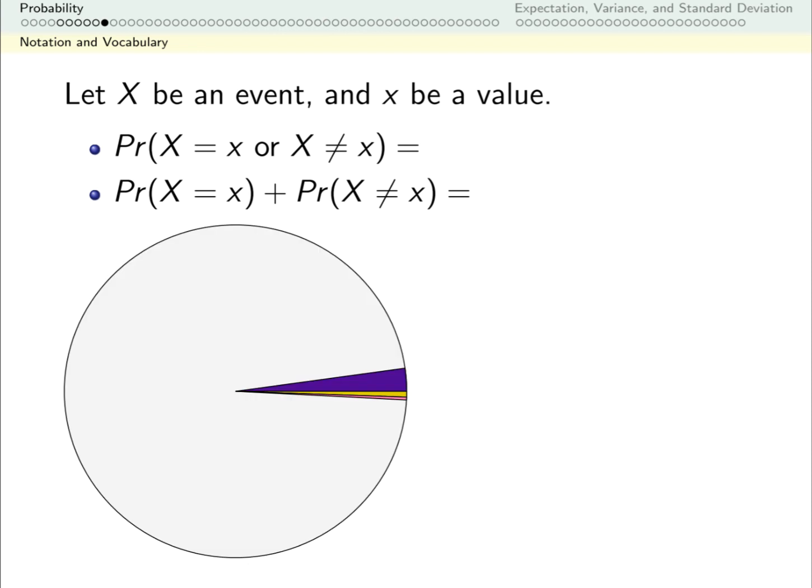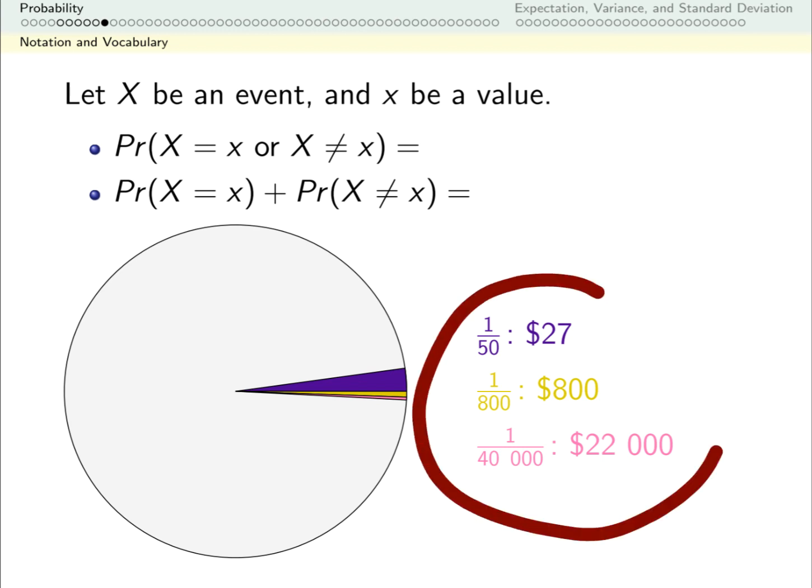This second line is really useful for calculating certain probabilities. We're going to later on talk about an example of the windfall lottery. For now, we're just going to give a few probabilities from one particular lottery that happened in 2010. So you buy a ticket and odds are 1 in 50 that you win $27 with that ticket. Odds are 1 in 800 that you win $800 with that ticket. And odds are 1 in 40,000 that you win $22,000 with that ticket. So in the pie chart, we've represented these colored wedges. But of course, the gray is the odds that you don't make any money.